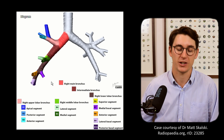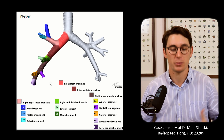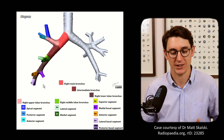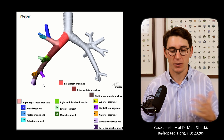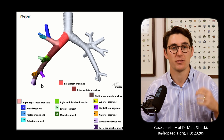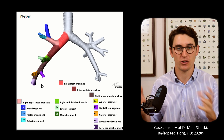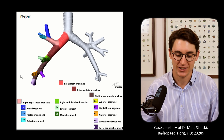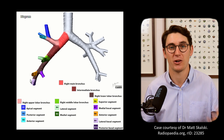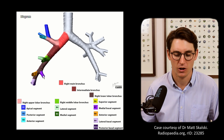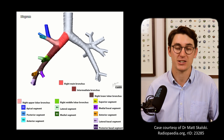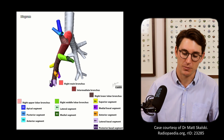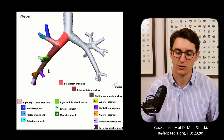A lot of people use a mnemonic like MALP here, but given time or under exam pressure you might confuse it with LAMP or PALM — those four letters can be arranged many ways, and you're more likely to recall a real word like PALM anyway. It's better to understand how the branches are arranged and remember that the posterior is simply the last one coming off.